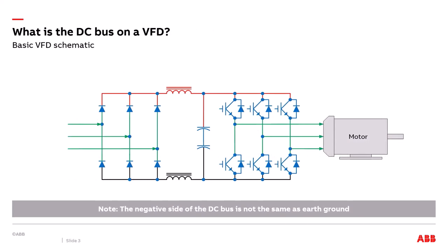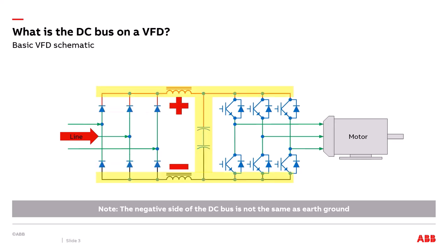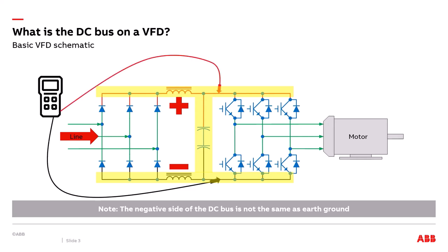Here's a basic schematic of a six-pulse drive. On the left is the input line voltage to the drive, and in yellow are the input diodes that rectify AC voltage to DC voltage. The DC bus is represented in yellow with plus and minus symbols for the positive and negative sides. The drive internally monitors the DC bus voltage with its own internal voltage meter. The load side or motor side can also cause an overvoltage fault, fed back into the DC bus via the flyback diodes highlighted in yellow, in parallel to each of the six output IGBTs. Note: the negative side of the DC bus is not the same as earth ground.